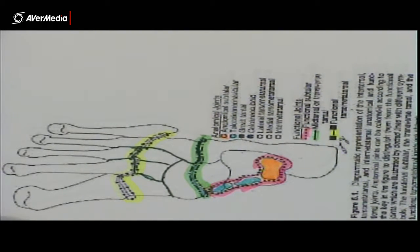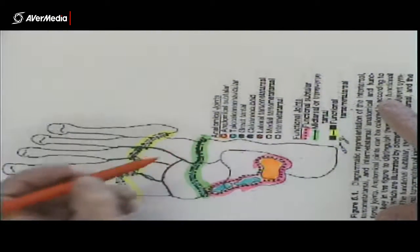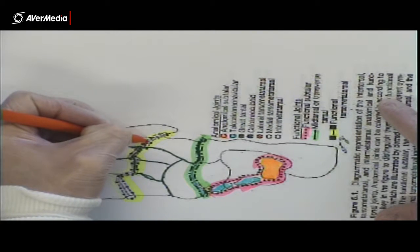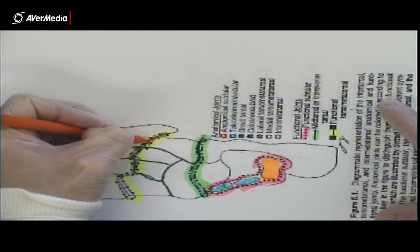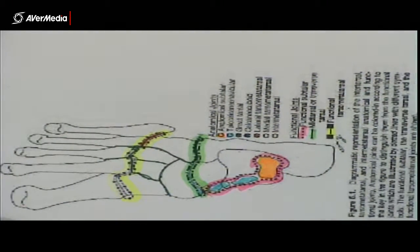Then we've got a lateral tarsometatarsal joint, which is here. So this is between the cuboid and metatarsals four and five. So that's the lateral tarsometatarsal joint.